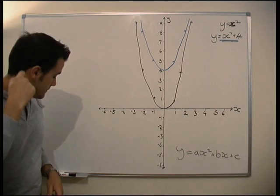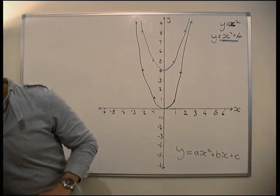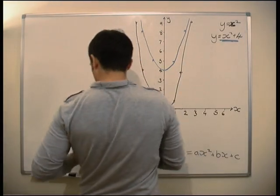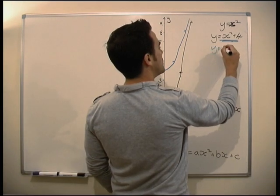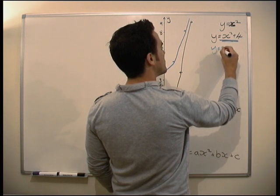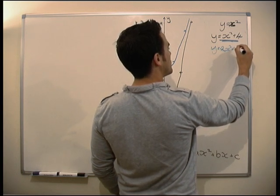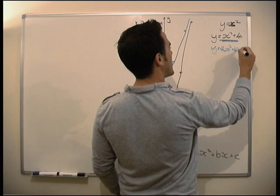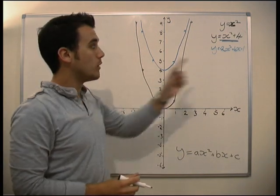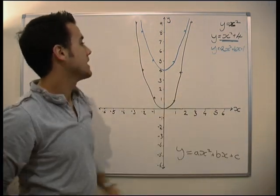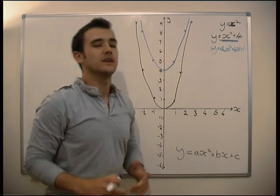What about if we've got a slightly more complicated graph? Let's do this one in green: y equals minus 2x-squared plus 4x plus 1. We can see that the intercept point is going to be 1, because when x is 0 the whole thing is going to be 1. So we know it's going to go through that point. For the rest of it, we're going to have to put some values in.